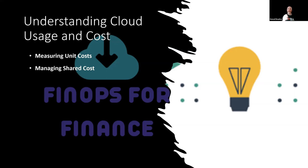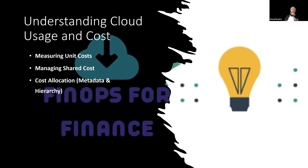Next up, we have managing shared costs. There are elements of costs within your bill from your cloud provider that can't be broken out by business unit or account — they're just, as the name suggests, a shared cost. Examples would be support costs or networking costs. You need to come up with a methodology for spreading that cost across the business, which ties into cost allocation — pushing those costs out to relevant BUs, applications, or teams so they know how much they're spending and have ownership of their slice of the cloud bill.